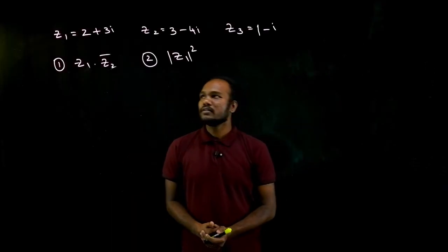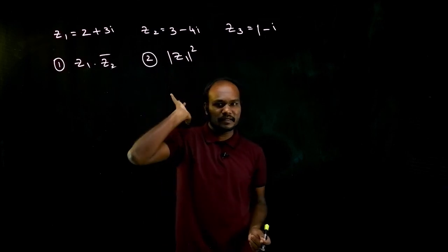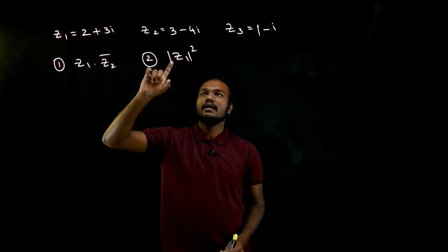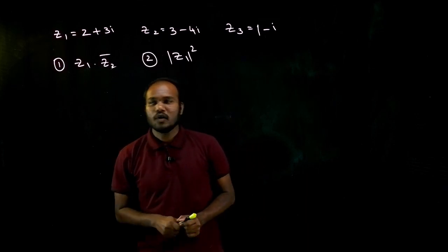Okay, what is given in the question? The value of z1 is given, z2 is given, z3 is given. We have to find what is the value of z1 times z2 bar, and also we have to find the magnitude squared of z1.